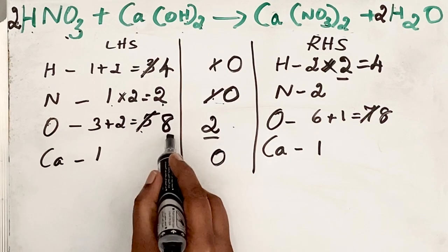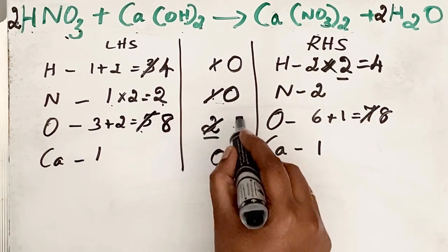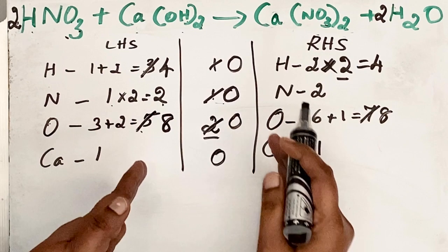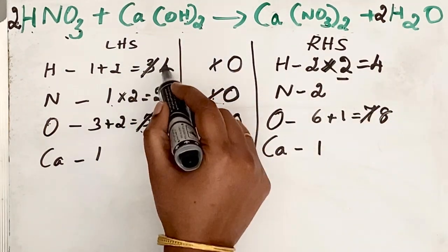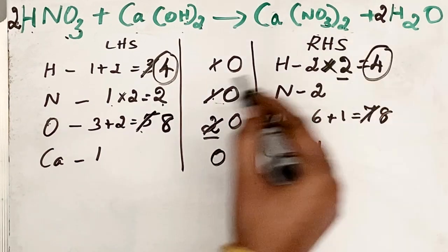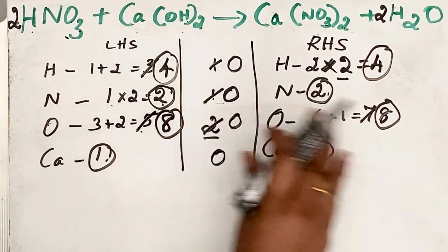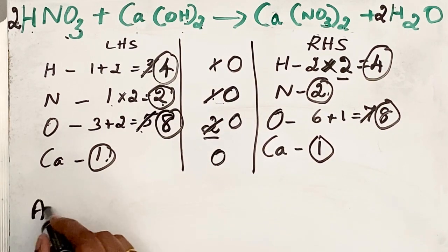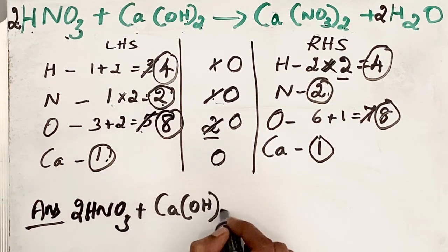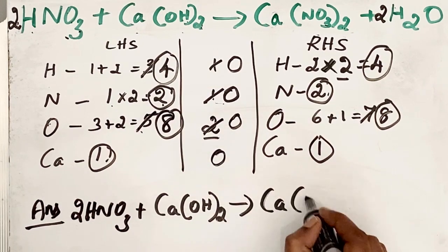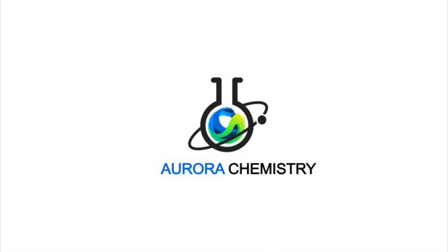Now let us come to oxygen atoms. Left-hand side: eight. Right-hand side: also eight. So oxygen is balanced. Let us verify all elements — hydrogen: four and four; nitrogen: two and two; oxygen: eight and eight; calcium: one and one. All elements are balanced. The final answer is: 2HNO3 + Ca(OH)2 → Ca(NO3)2 + 2H2O. Thanks for watching this video.